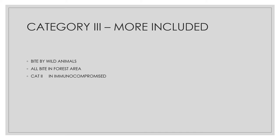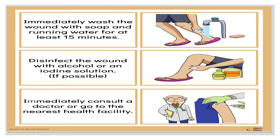All bites in forest areas are considered Category 3. Immunocompromised patients — such as those with malignancy, cancer, taking immunosuppressive drugs, or AIDS patients — are treated as Category 3 even if their exposure is Category 2. Category 3 includes single or multiple transdermal bites with oozing blood, licks on broken skin or mucous membranes.